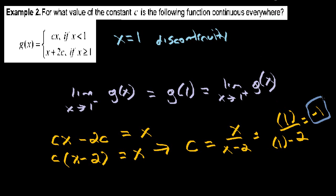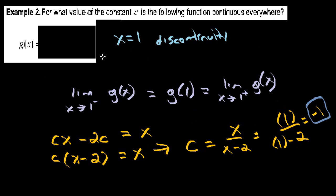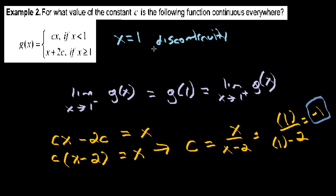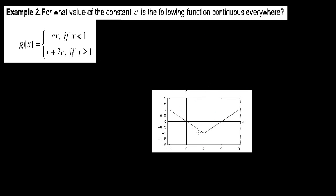In order to get this function to be continuous everywhere, we just need a c value of negative 1. Now if we were to actually graph the function here with a c value of negative 1, it would look something like this. Notice here that at x equaling 1, only with the constant of having c equal negative 1 can we have a continuous function. Notice that there are no breaks here.